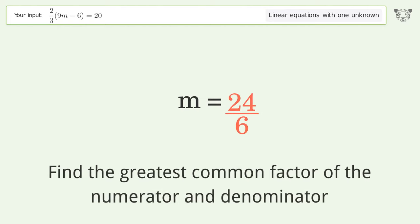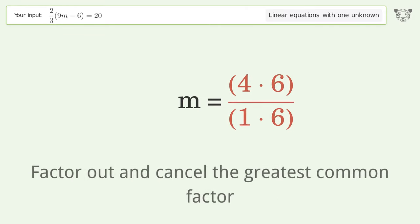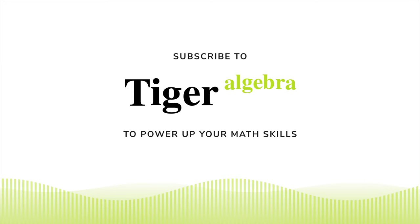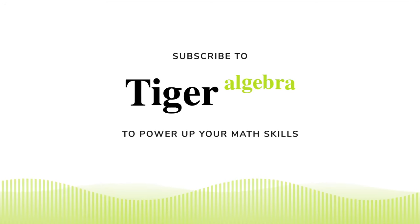Find the greatest common factor of the numerator and denominator. Factor out and cancel the greatest common factor. And so the final result is m equals 4.